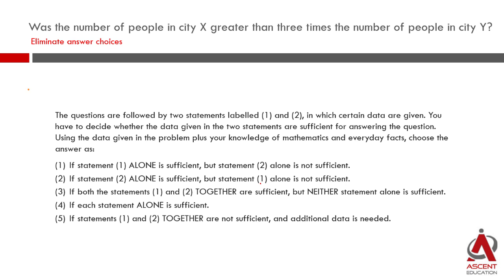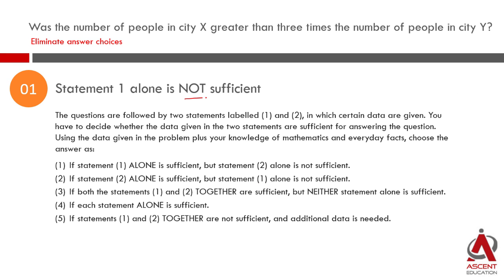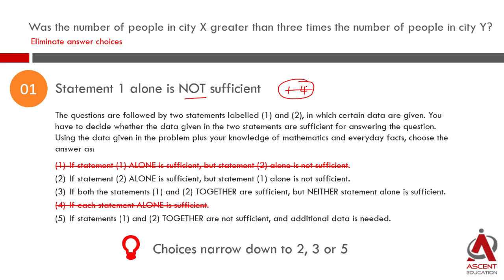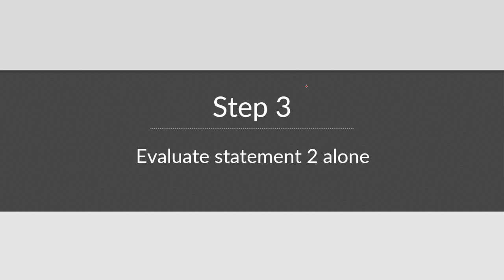Statement 1 is not sufficient. As we know, we can eliminate some answer choices. Statement 1 is not sufficient, so we eliminate answer choices 1 and 4. Our answer choice is going to be one of the remaining — either 2, 3, or 5. So we will evaluate Statement 2 alone.